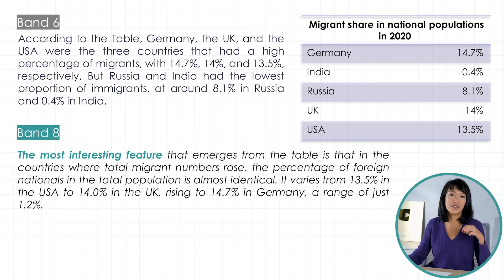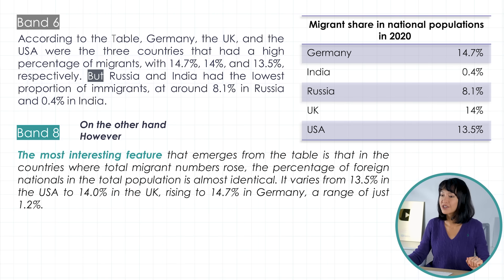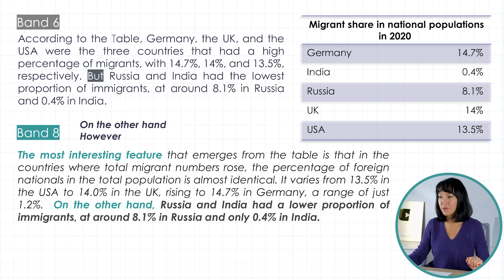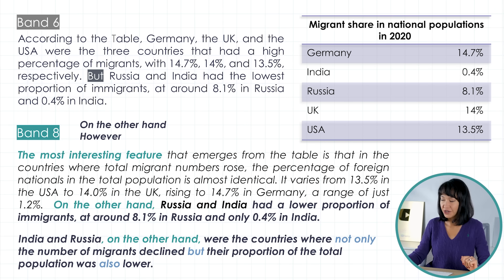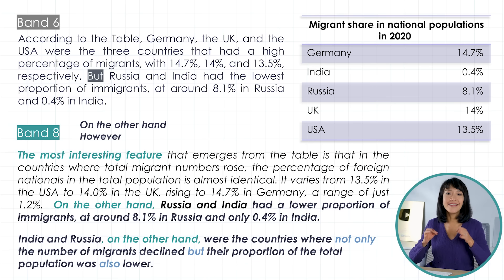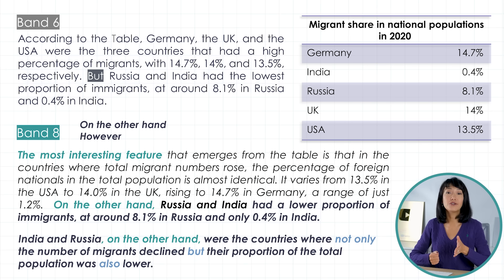The beginning of the next sentence with a tired-looking 'but' is very basic. We can replace it with 'however' or 'on the other hand'. 'On the other hand, Russia and India had a lower proportion of immigrants at around 8.1% in Russia and only 0.4% in India.' Of course we could add more — maybe more sophisticated vocabulary like 'foreign-born nationals' to replace 'migrants', or more complex grammatical structures. 'India and Russia, on the other hand, were the countries where not only the number of migrants declined, but their proportion of the total population was also lower.' Here I hid the linker 'on the other hand' inside the sentence for a smoother transition, and used the sentence structure 'not only... but also'.